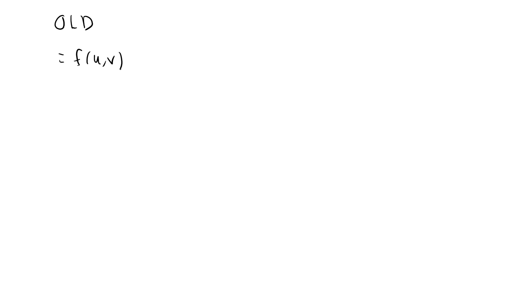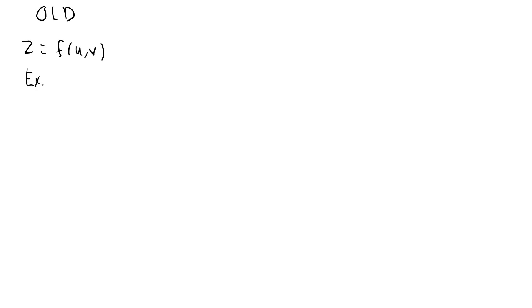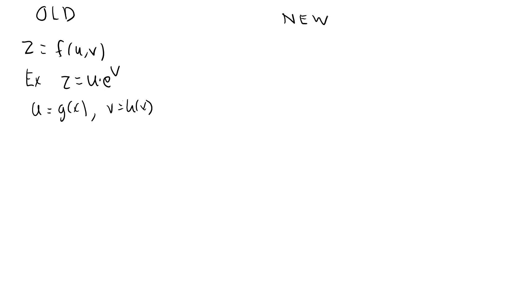In a previous lecture, we considered the chain rule when we had a function of two variables. I called it y before; I will call it z here because I'm going to use y for something else. The example we considered was z equal to u times e to the v, where u was some function of x and v was some function of x. I will now extend this to a slightly more general situation.